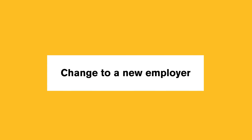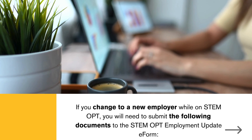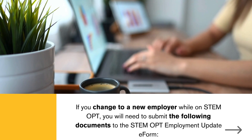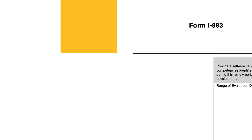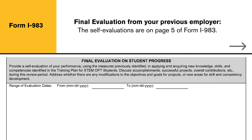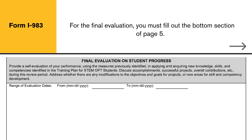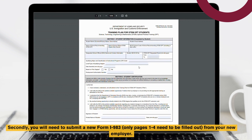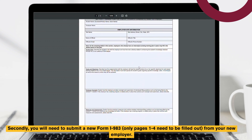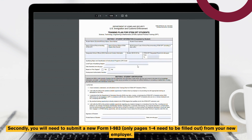Change to a new employer: if you change to a new employer while on STEM OPT, you will need to submit the following documents to the STEM OPT Employment Update e-form. First, a final evaluation for your previous employer — the self-evaluations are on page 5 of Form I-983, and for the final evaluation you must fill out the bottom section of page 5. Evaluations must be signed by the student and their immediate supervisor. Second, you will need to submit a new Form I-983 — only pages 1 to 4 need to be filled out — from your new employer.